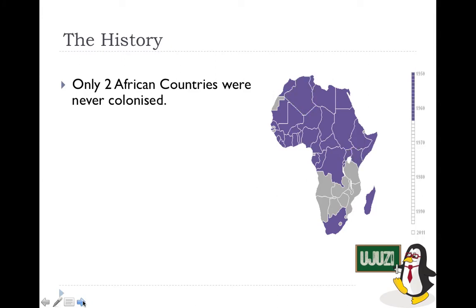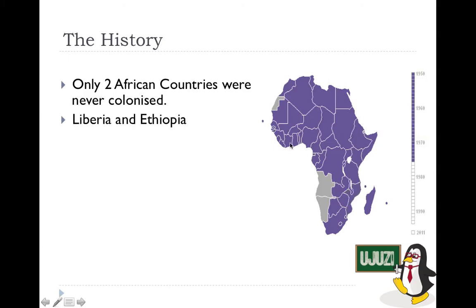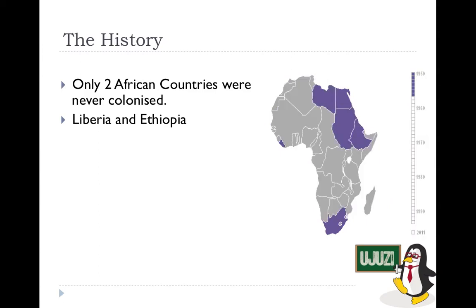Only two African countries were never colonized: Ethiopia and Liberia. Ethiopia was never conquered by any European power. Liberia was formed out of slaves brought from America who were settled there, so it was also never colonized in the traditional sense.